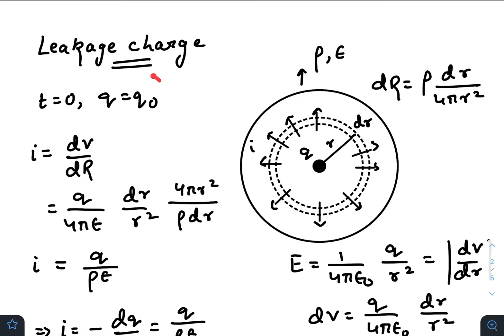At t equals zero, the value of the charge is q₀. Due to this charge, as this charge is present inside a conducting medium, this charge will leak away radially so that some current can flow inside this medium.